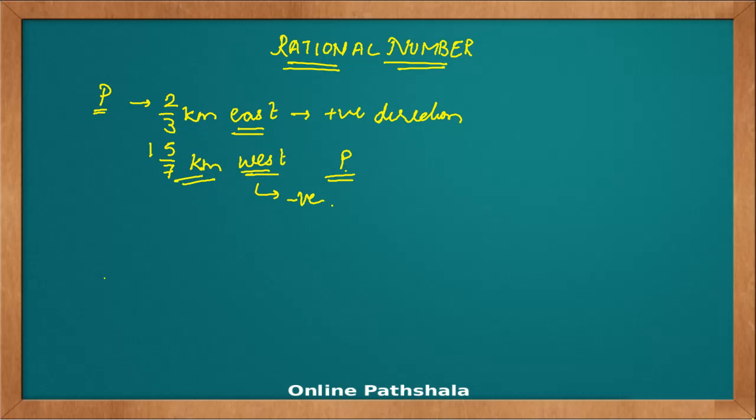This gives me 2/3 minus 1 5/7, which is equivalent to 2/3 minus 12/7, converting the mixed number to an improper fraction.